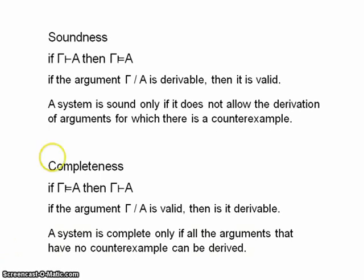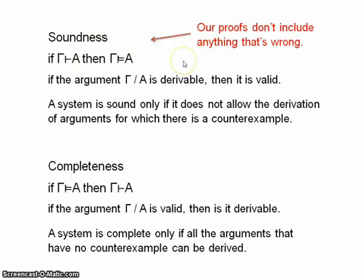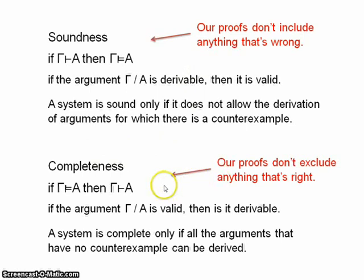A simple way of thinking about these two concepts is that soundness means that our formal proofs don't accept anything that's wrong and completeness means that they don't exclude anything that's right.